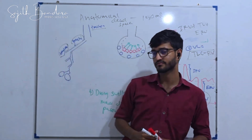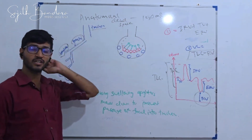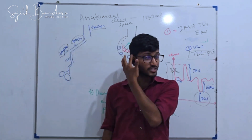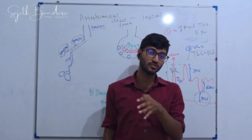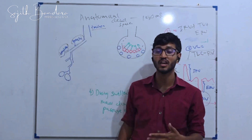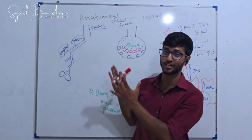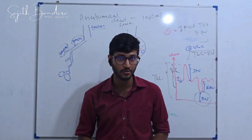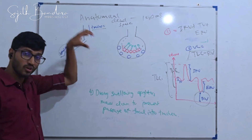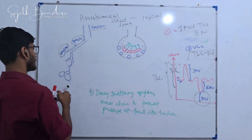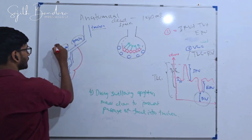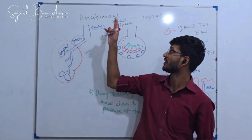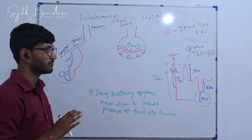This is where it becomes tricky. If a statement says 'anatomical dead space present inside the lungs is 150 milliliters,' is that true or false? As soon as you see anatomical dead space and 150 milliliters together, you are obviously going to mark it as true. But it is false, because anatomical dead space is not only located in the lungs — the lungs only cover part of the bronchi and bronchioles. The trachea is not covered by the lungs, so that statement is totally false.